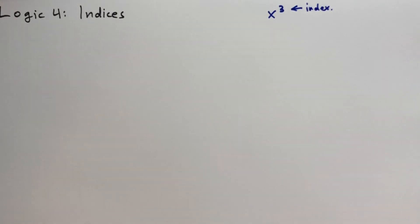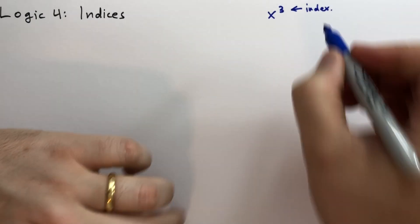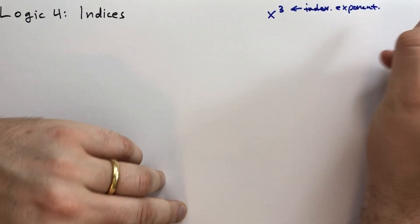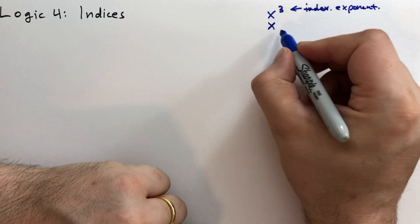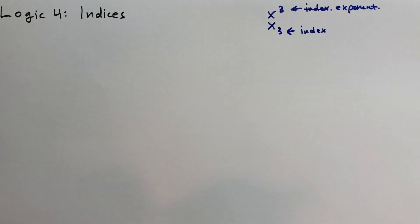In America, heck yeah, we call this an exponent. So this is not an index. This is an exponent for us Americans. The index is this number on the bottom. This is the index that we call the index. I think they call it subscript in the British system. I could be wrong. I didn't take math from any British professors.